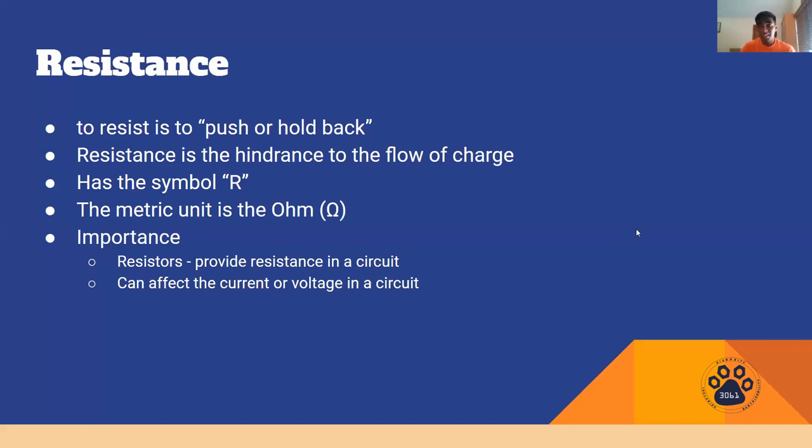Resistance has the symbol of R and its metric unit is the ohm which is represented by the Greek omega symbol. It's important to electrical in general in the use of resistors. Resistors obviously come from the word resistance and a resistor provides a certain amount of resistance and it can reduce the amount of current or voltage in a wire. And this is important to possibly fit the criteria of a component you're using.